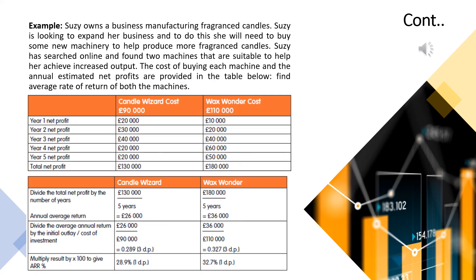To calculate the ARR percentage: divide the total net profit by the number of years. For machine one, total profit is $130,000 divided by 5 years, giving an average annual profit of $26,000. For machine two, $180,000 divided by 5 years gives $36,000. The average rate of return is: $26,000 divided by $90,000, giving approximately 28.9%. For machine two, $36,000 divided by $110,000 gives approximately 32.7%.